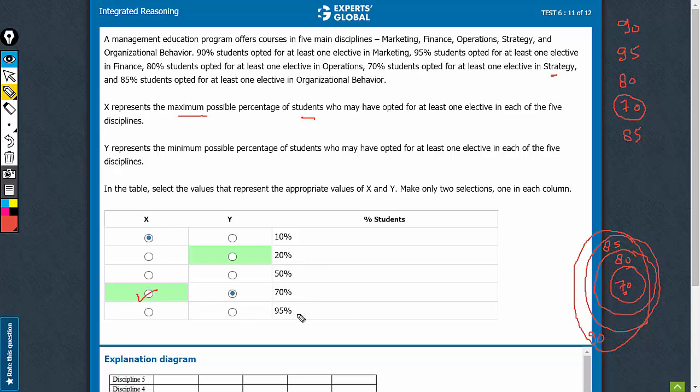The second column, we need to find out the minimum possible overlap. So let's find the total. This turns out to be 420. The total is 420.